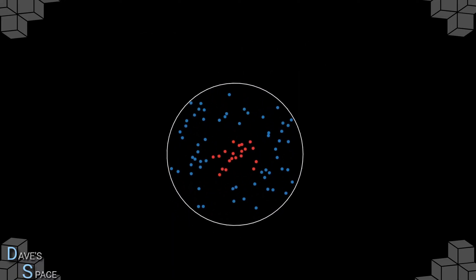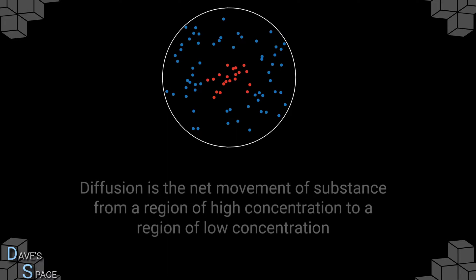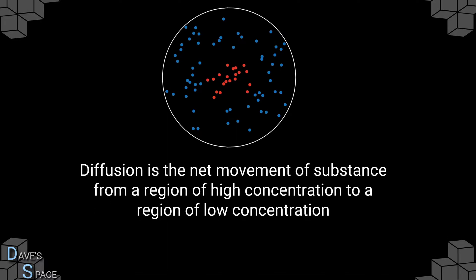So what is diffusion? In terms of a physical object or substance, diffusion is the net movement of that object or substance from a region of high concentration to a region of low concentration.